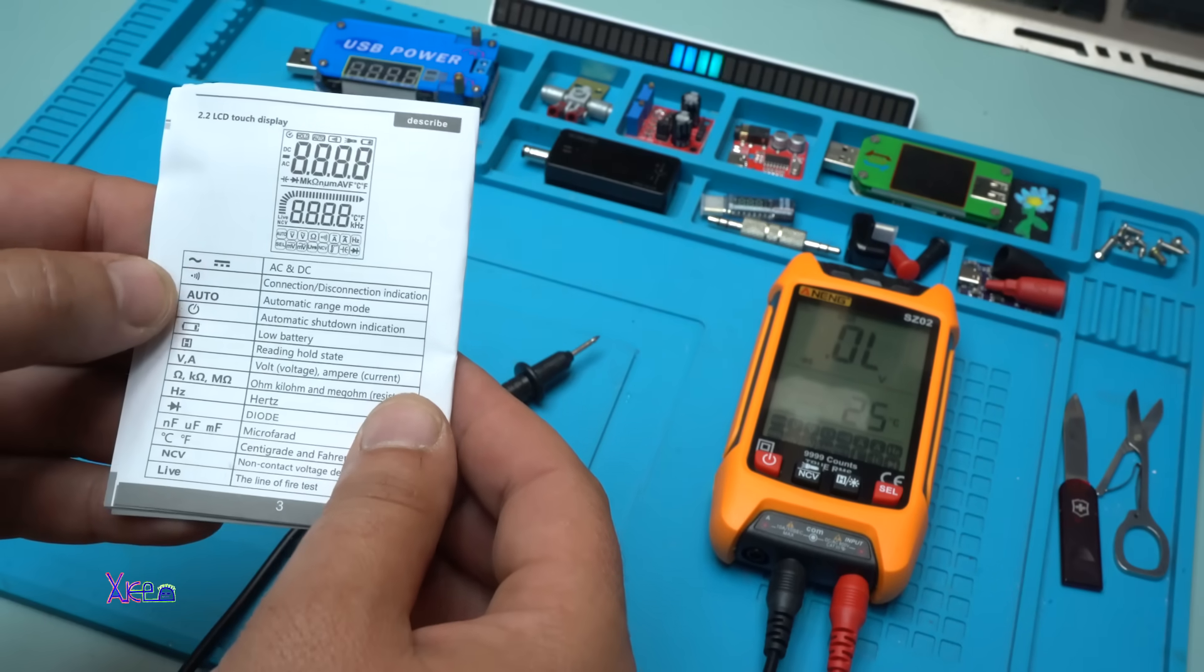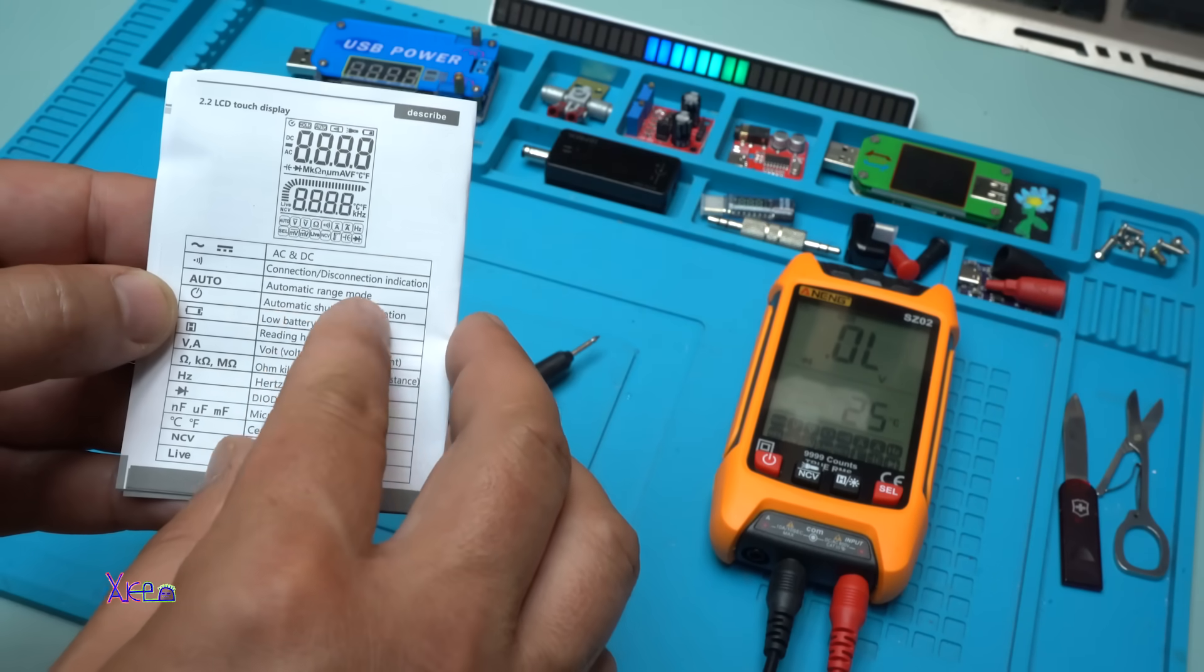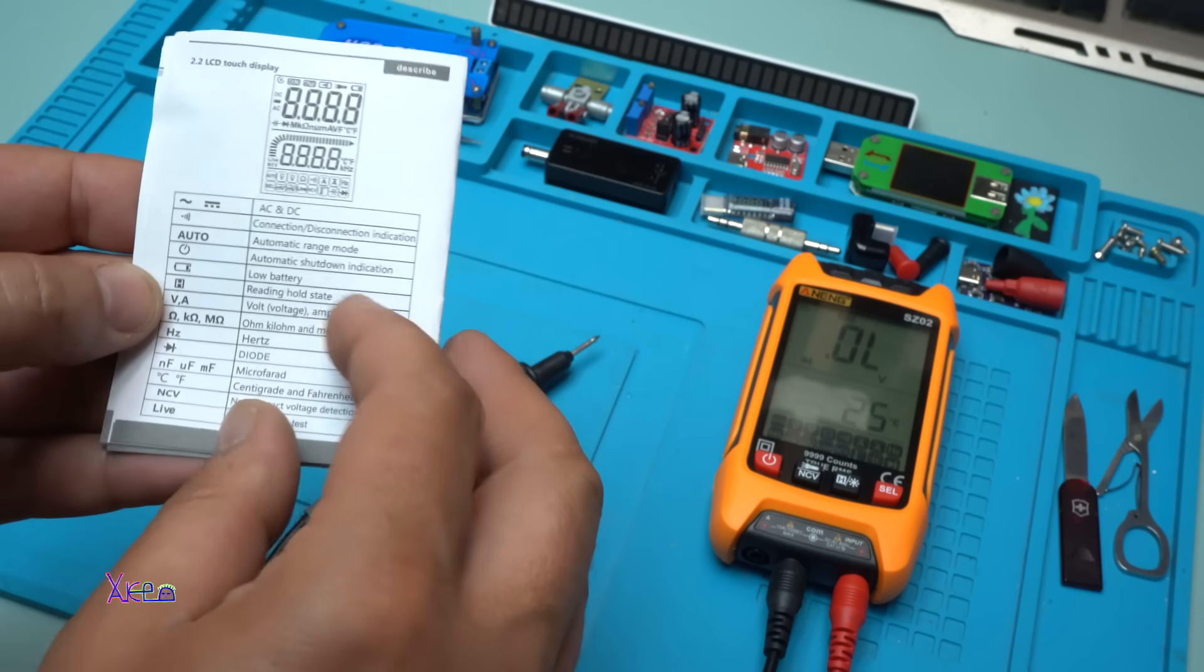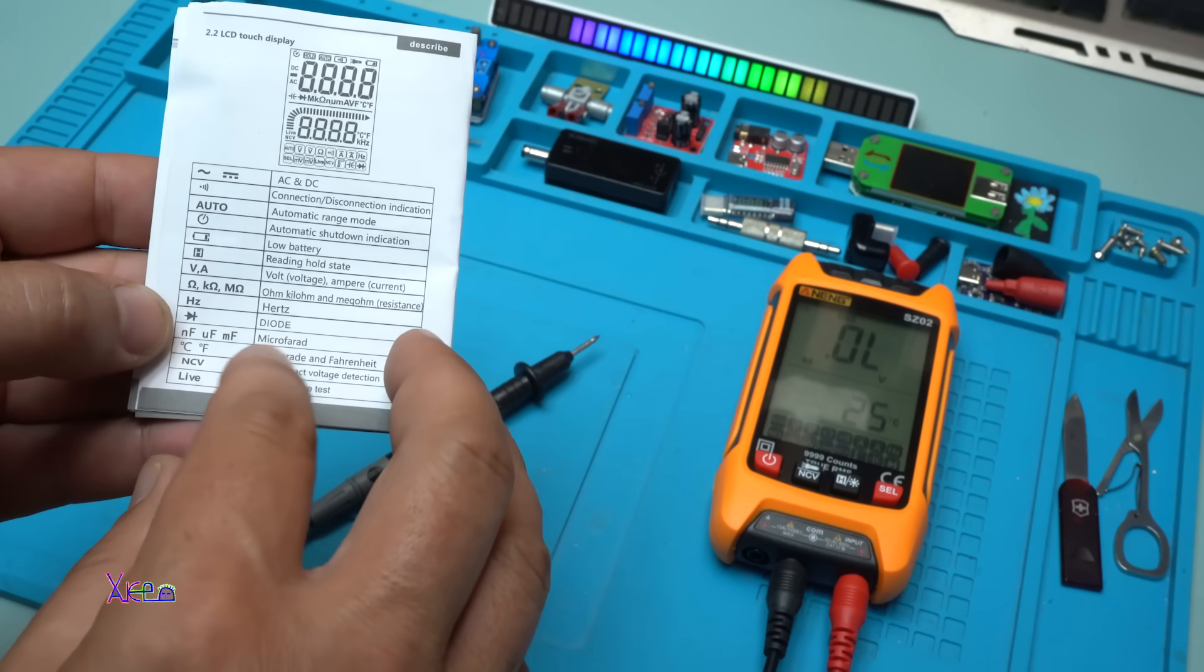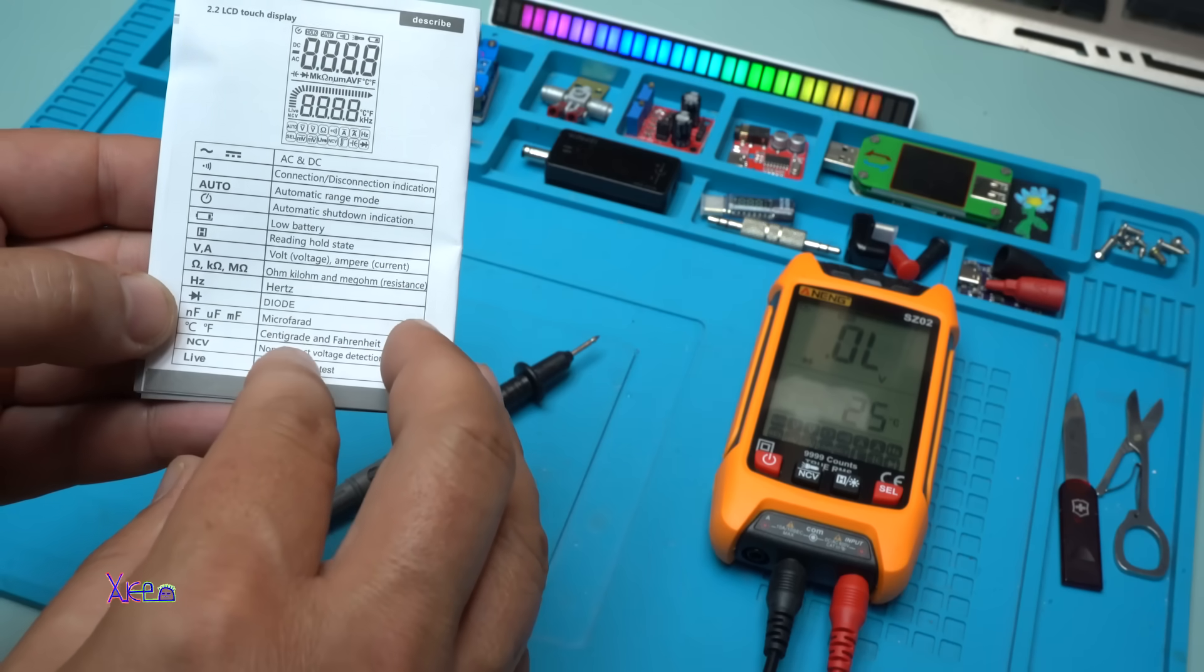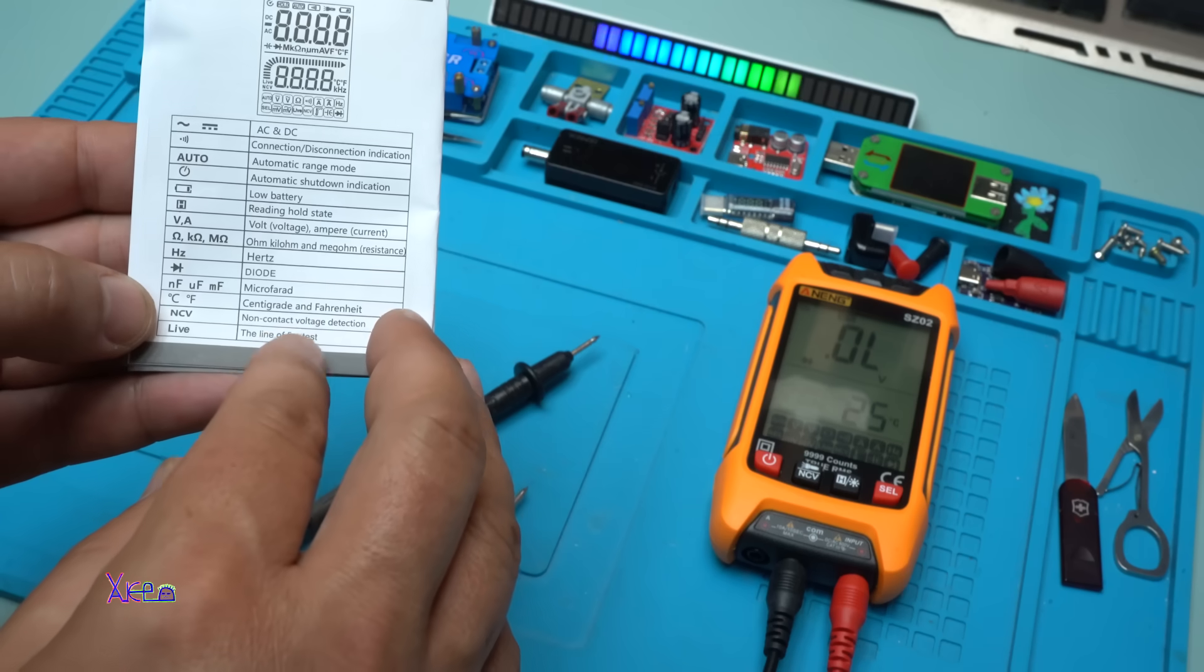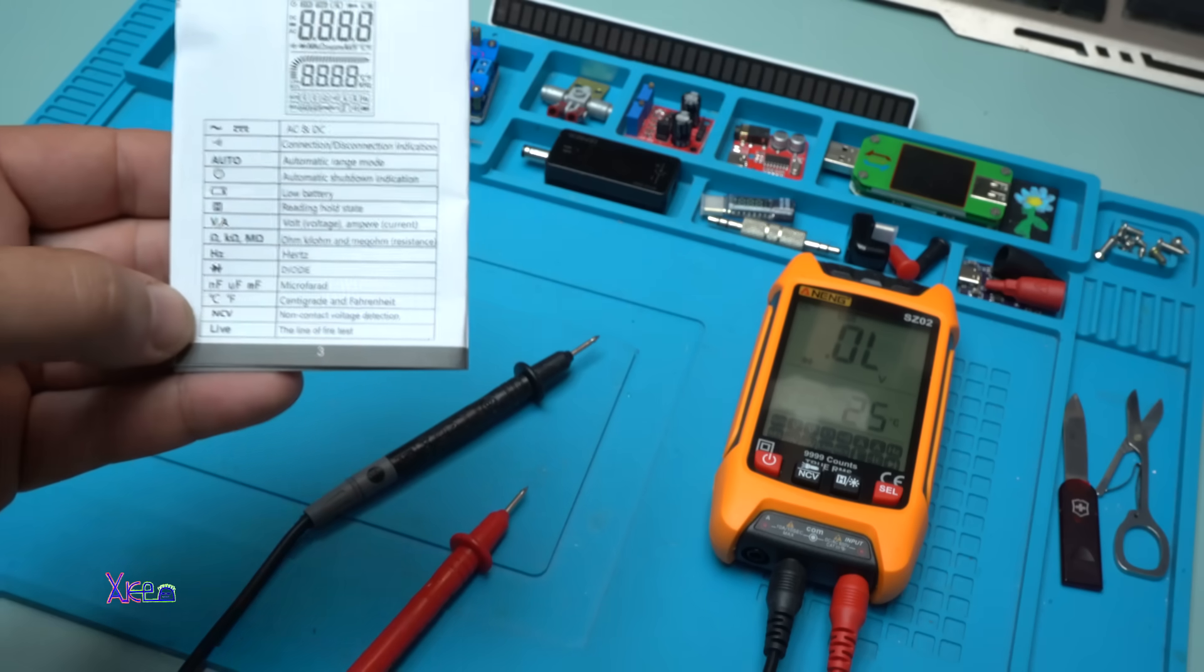To mention one more time, it measures AC DC. It has automatic range mode, automatic shutdown indication, low battery. It can measure hertz for frequency on AC voltage. Diode. Microfarads. Celsius and Fahrenheit temperature. Non-contact voltage detection. And the line of fire test.